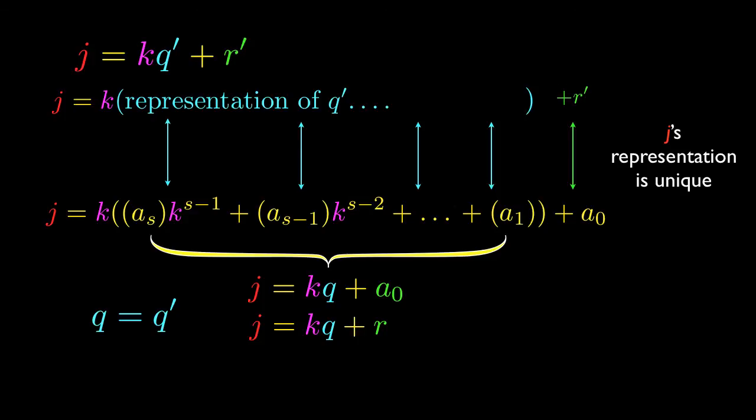So r prime is equal to A sub zero, which means that r prime is equal to r, or r is equal to r prime. And this proves that there's uniqueness, because if there is another q and r that work, they have to be the same old q and r that work.